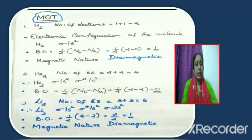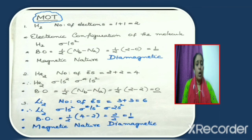Consider helium molecule He2. The total number of electrons in the molecule is equal to 4, so the electronic configuration is sigma 1s², sigma star 1s². Bond order = half of (2 minus 2) = 0. Bond order 0 means such a molecule does not exist, so we can say that the He2 molecule does not exist.